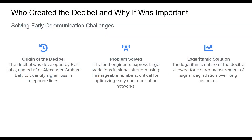The decibel, developed by engineers at Bell Labs and named in honor of Alexander Graham Bell, was a major breakthrough in early telecommunications. As telephone lines expanded, engineers faced the challenge of measuring signal losses across long distances. The decibel, based on the logarithmic scale, allowed them to quantify these losses in a more intuitive and scalable way. This system revolutionized how we measure not only signal strength, but also sound and power, solving the issue of managing large variations in values and making modern communications possible.